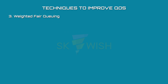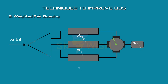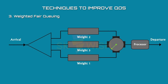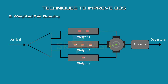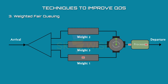Weighted Fair Queuing is similar to priority queuing, but queues are weighted based on their priority — higher priority means a higher weight. The system processes packets in each queue in a round-robin fashion, with the number of packets selected from each queue based on the corresponding weight. For example, if the weights are 2, 3, and 1, then three packets are processed from the second queue, two packets from the first queue, and one from the third queue.